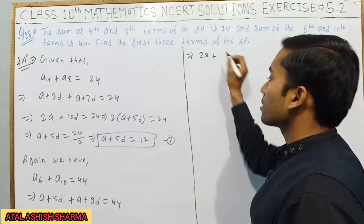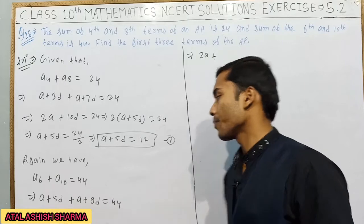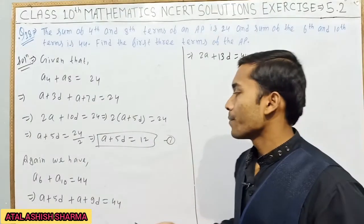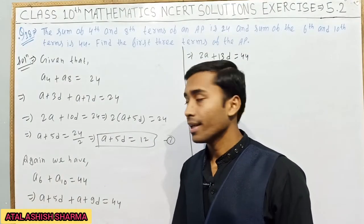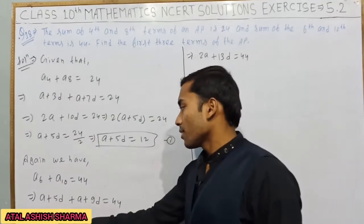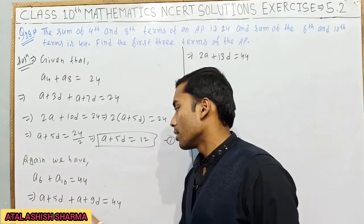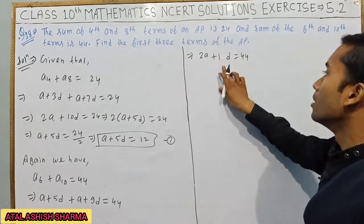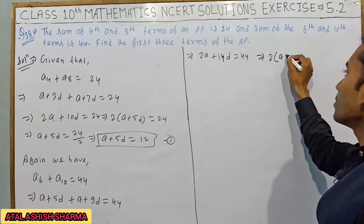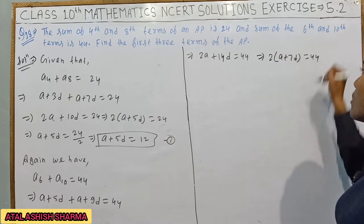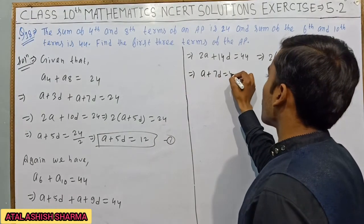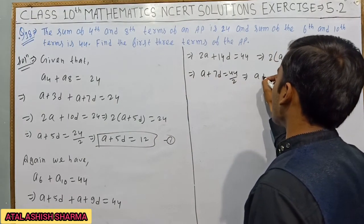So this becomes 2a plus 14d equals 44. Taking 2 common, a plus 7d equals 44 upon 2, which gives a plus 7d equals 22. This is your second equation.